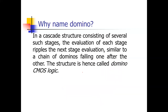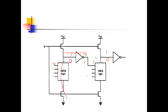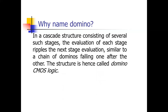The next question is: why is its name domino logic? Because the evaluation of the first stage triggers the evaluation of the next stage, and the evaluation of the next stage triggers the third stage — like dominos falling one after the other. That's why it is called domino logic.